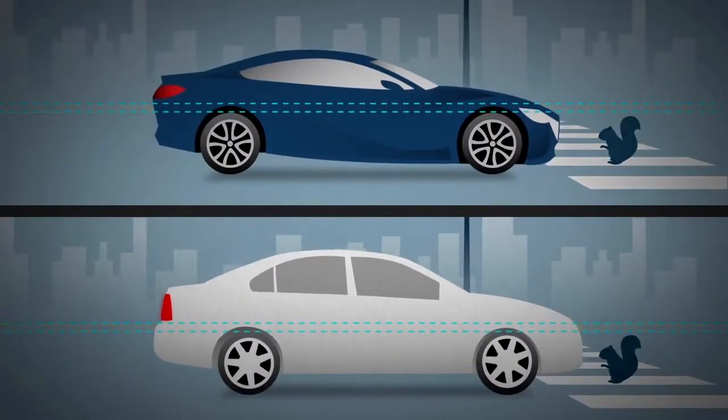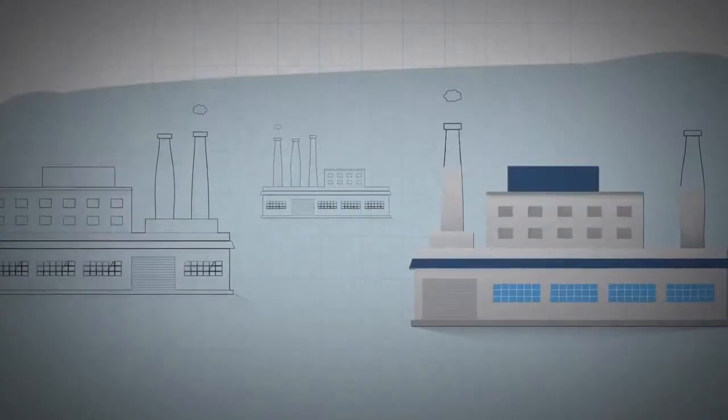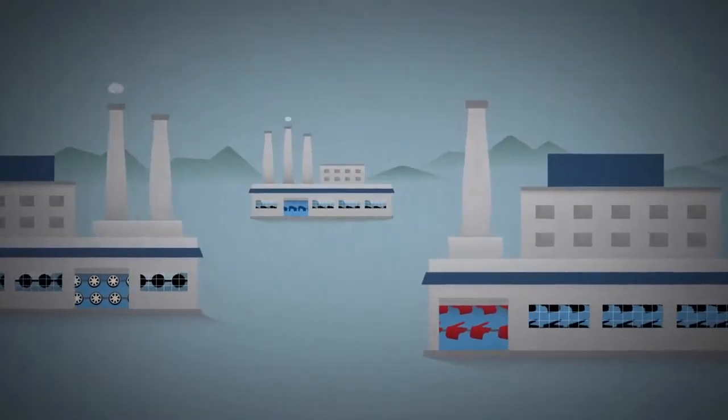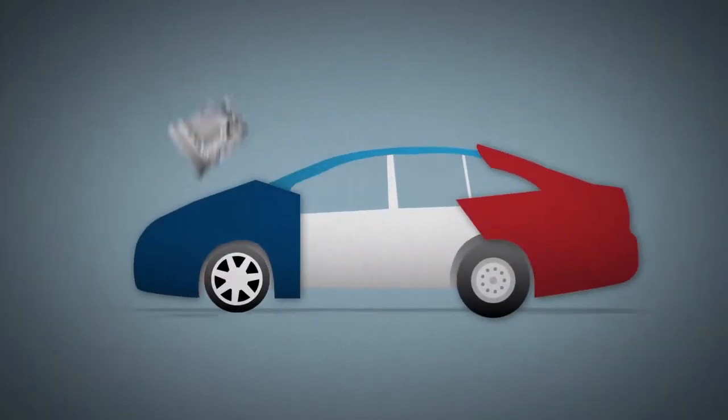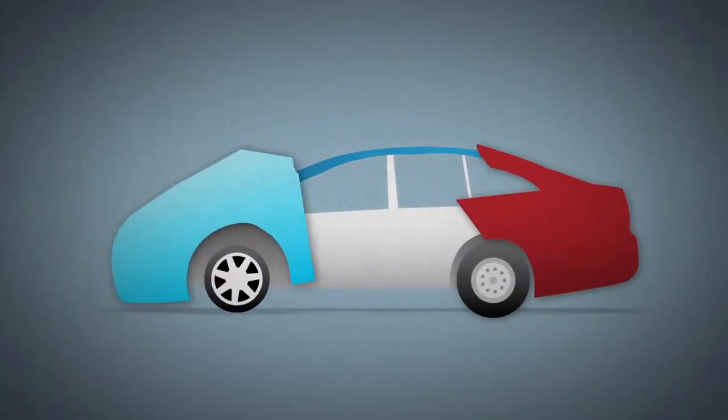Big changes like these were made possible by our clean sheet approach. In many cases, car chassis and bodies are engineered by different groups, even different companies at different times. When you do this, each part has to be compromised in order to work with the other.